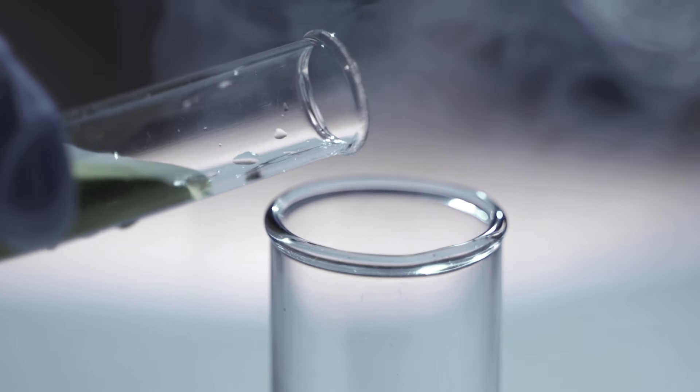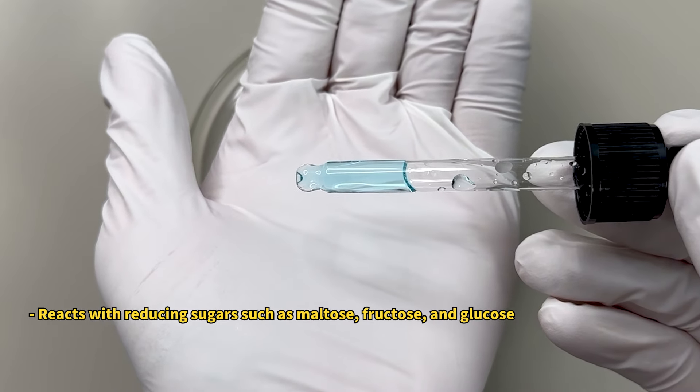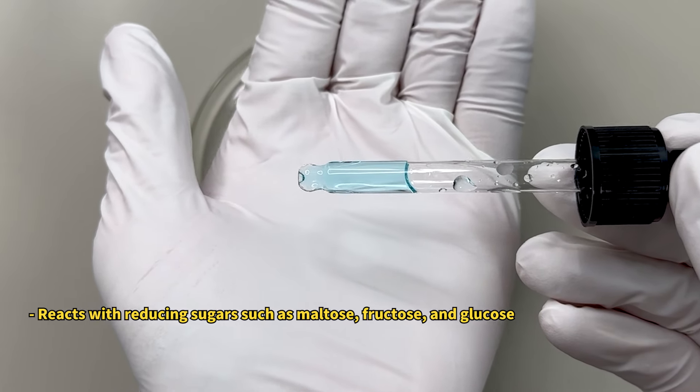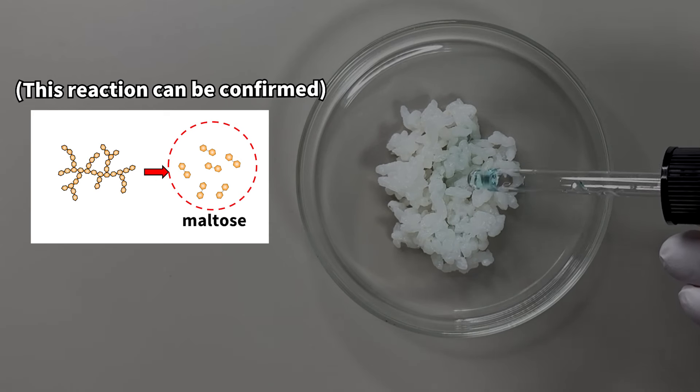For our amylase test, we used Benedict's reagent. Benedict's reagent changes color upon contact with sugars like maltose or glucose, making it ideal for testing for amylase.